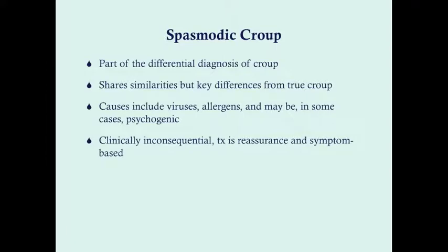Spasmodic croup is part of the differential diagnosis of croup. It shares similarities but key differences from viral croup. It does include viruses, but also includes allergens and in some cases can be psychogenic. Clinically, it's largely inconsequential — even viral croup is not really a serious disease in the vast majority of cases, and spasmodic croup almost always is not a serious problem.